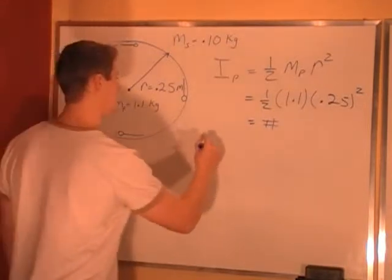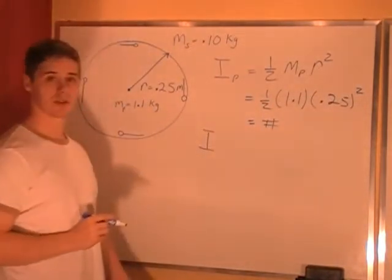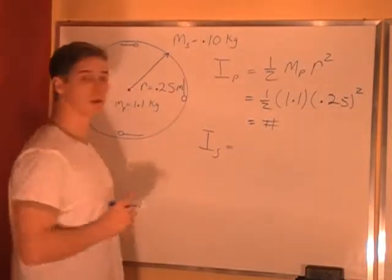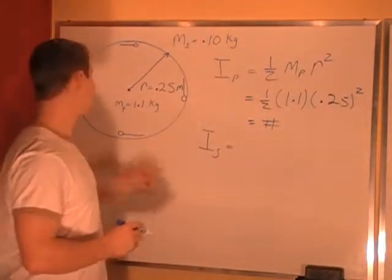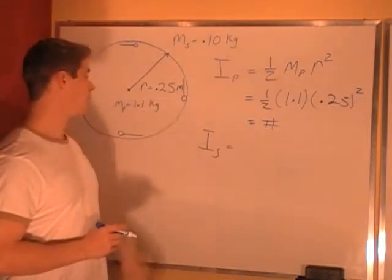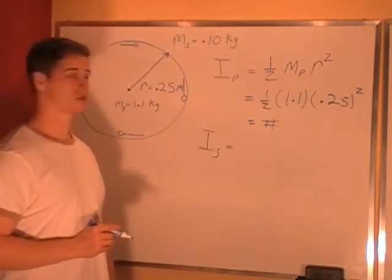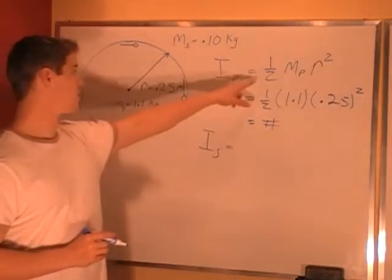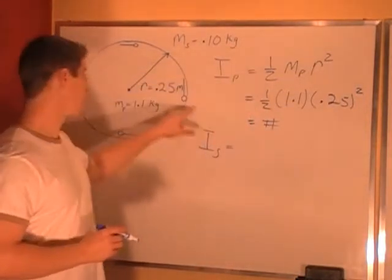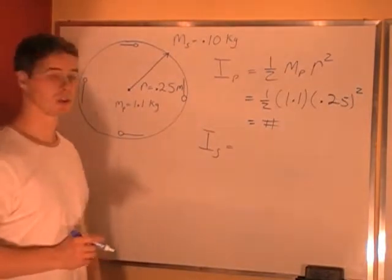We also have the moment of inertia of the spoons. When you have a point particle a certain distance away from an axis of rotation, that moment of inertia is equal to the mass times r squared. For a solid serving plate it's 1/2 mr squared. For a single point it's mr squared.